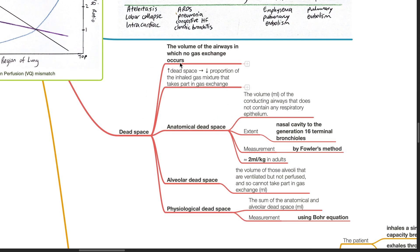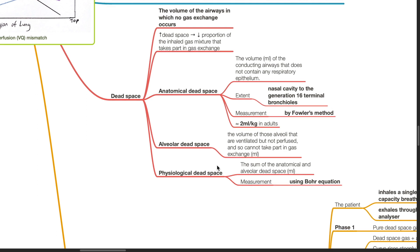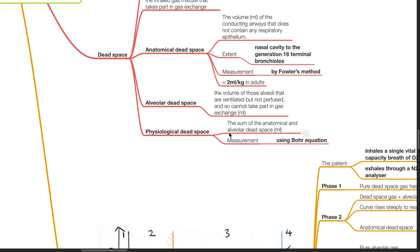Dead space is the volume of the airways in which no gas exchange occurs. Increased dead space results in a decreased proportion of the inhaled gas mixture that takes part in gas exchange. Anatomical dead space is the volume of the conducting airways that does not contain any respiratory epithelium, extending from the nasal cavity to generation 16 of the terminal bronchioles. It is measured by Fowler's method and is approximately 2 mL per kg in adults. Alveolar dead space is the volume of alveoli that are ventilated but not perfused. Physiological dead space is the sum of anatomical and alveolar dead space, measured using Bohr's equation.